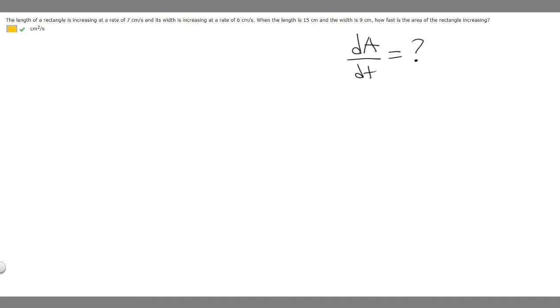Now let's write down what we're given. So we're told that the length of the rectangle is increasing at 7 centimeters per second. So the rate at which the length is changing with respect to time, so that's going to be dL/dt, and they tell us that that's 7. They also give us the rate at which the width is increasing, so the rate at which the width is changing with respect to time, and they tell us that that is 6.